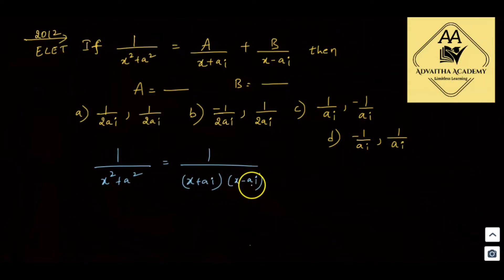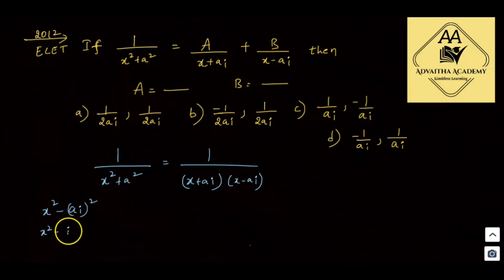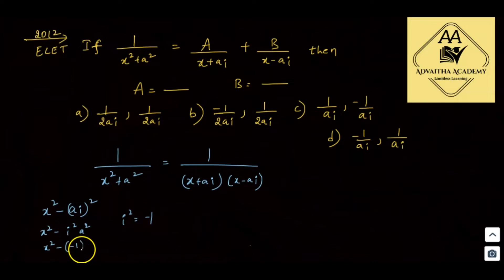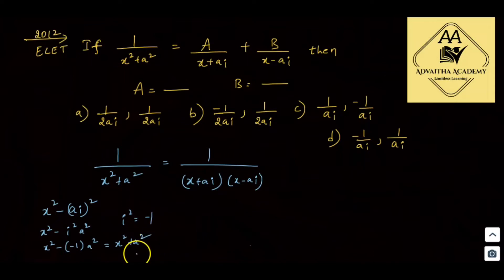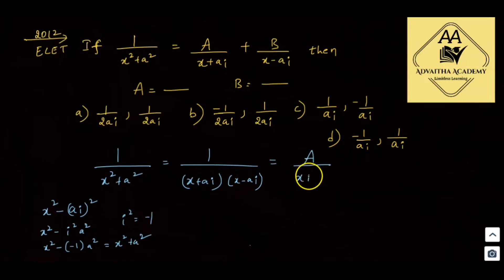Using the identity (a + b)(a - b) = a² - b², we get x² - (ai)² = x² - i²a². Since i² = -1, this becomes x² - (-1)a² = x² + a². So x² + a² can be factored as (x + ai)(x - ai). Therefore, the partial fraction decomposition is A/(x + ai) plus B/(x - ai), which matches the given equation.